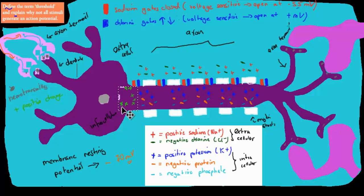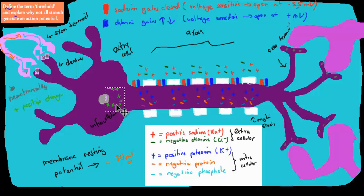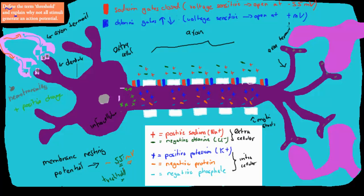So at resting potential, when there's no stimulus at all, we have a resting potential of minus 70 millivolts. Because now we have a flood of positive charge — and millivolts is just the comparison between the inside and outside — we now have more positive charge than before. This will change the resting potential and make the inside slightly more positive, removing some of that negative charge. So it will actually go down to about minus 55 millivolts, and that's important because that's the threshold. If it drops only to minus 60 millivolts, it's not going to be an action potential. It has to drop down to about minus 55, because that's when the sodium gates open.